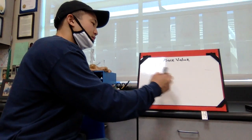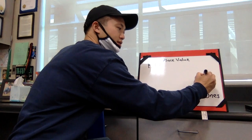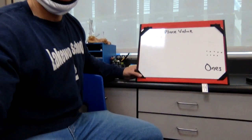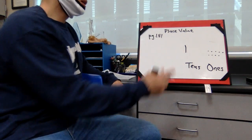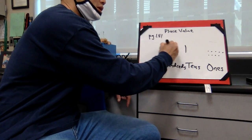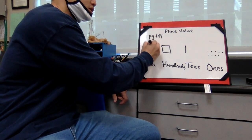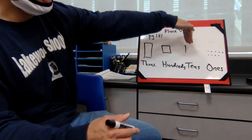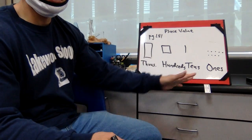So remember place value drawings. Your ones are dots, so you can do these dots to represent ones. So that would be nine. Tens are represented by a straight line. Hundreds are represented by a box. And then thousands are represented by this long rectangle. So it takes ten of these ones to make one of these lines, ten of these lines to make one of these boxes, and then ten of these boxes to make one of these rectangles. That's how you read the place value.